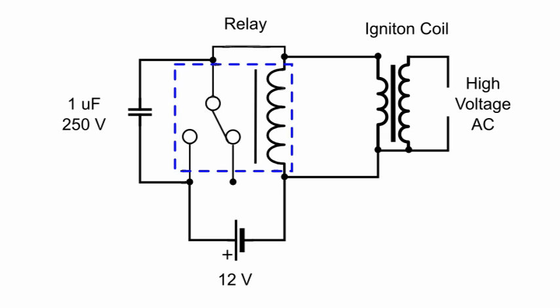This makes the normally close contact move to the other position and the flow of current stops. Now the coil is de-energized and the contact moves again to the original position and the cycle repeats.